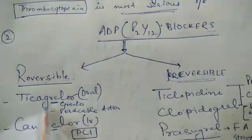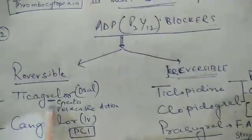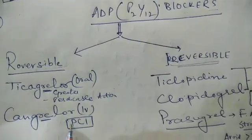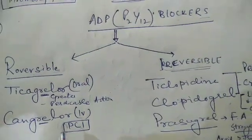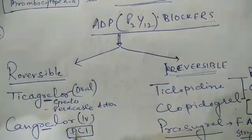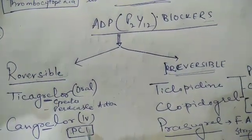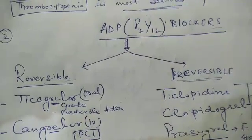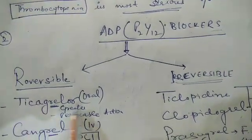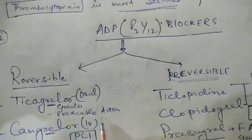Ticagrelor and cangrelor. Cangrelor is given through IV route and it is used during percutaneous coronary intervention as an adjunctive treatment. While ticagrelor is given orally and it has more greater and predictable action as compared to the irreversible blockers.